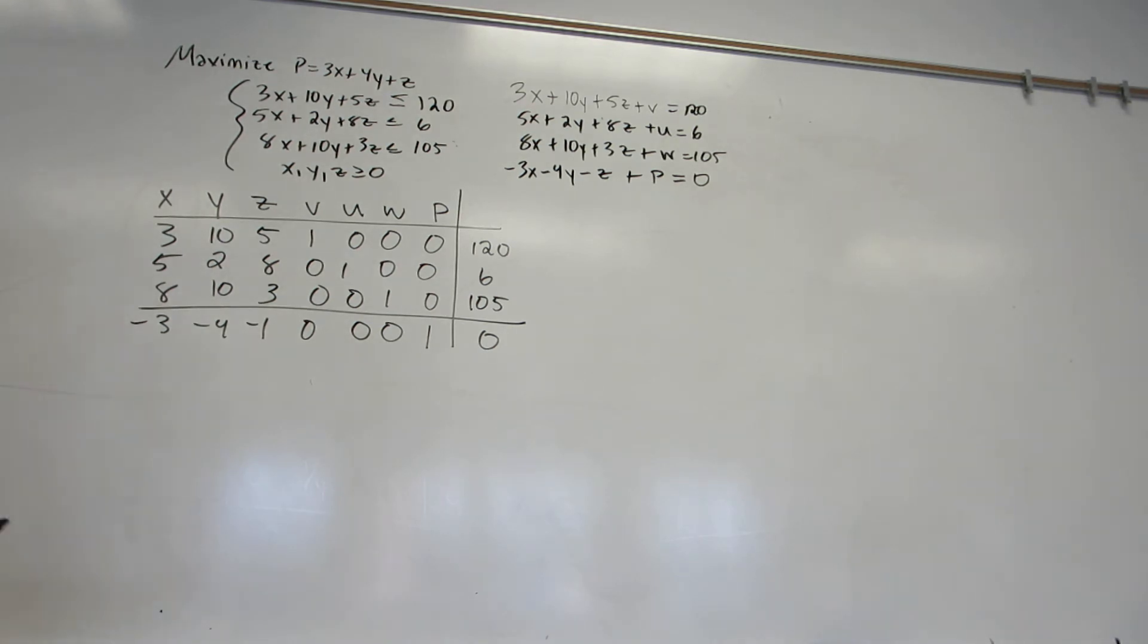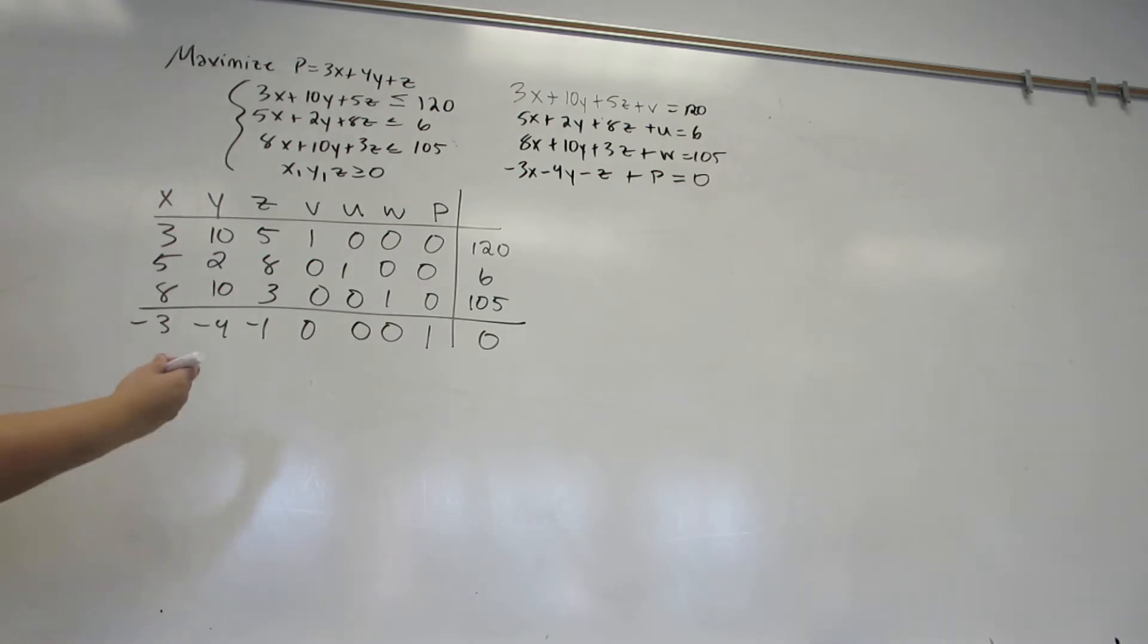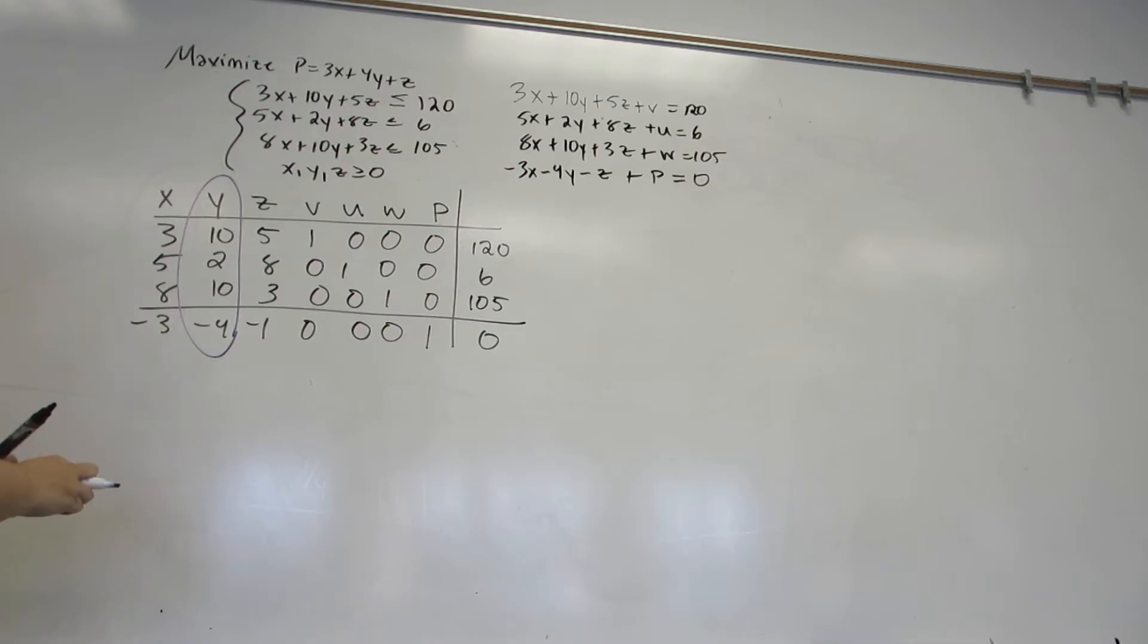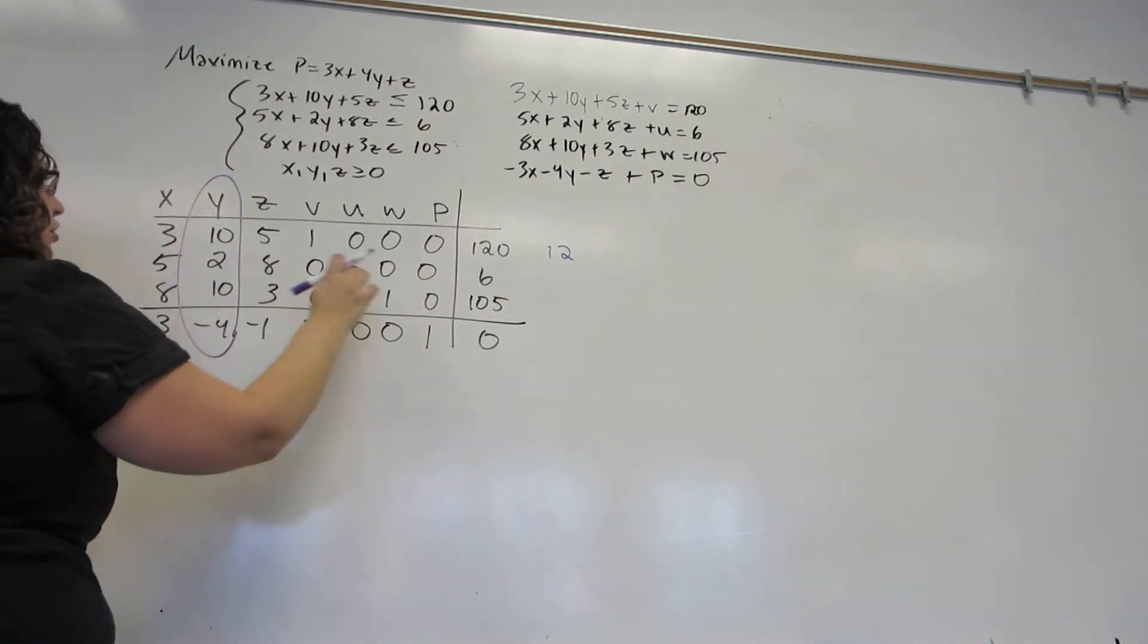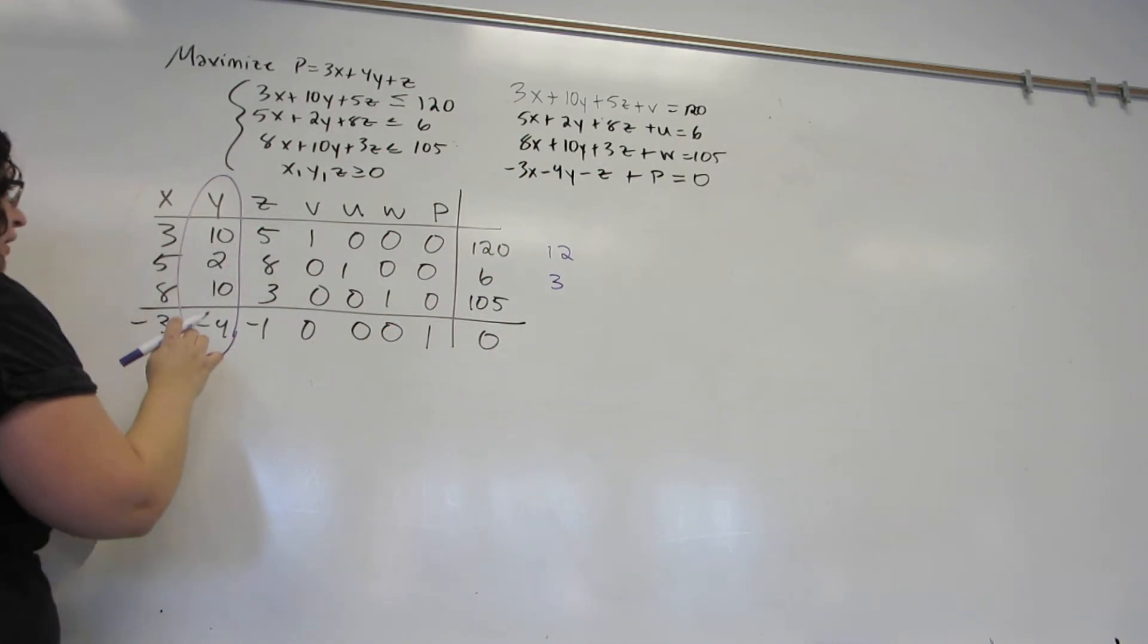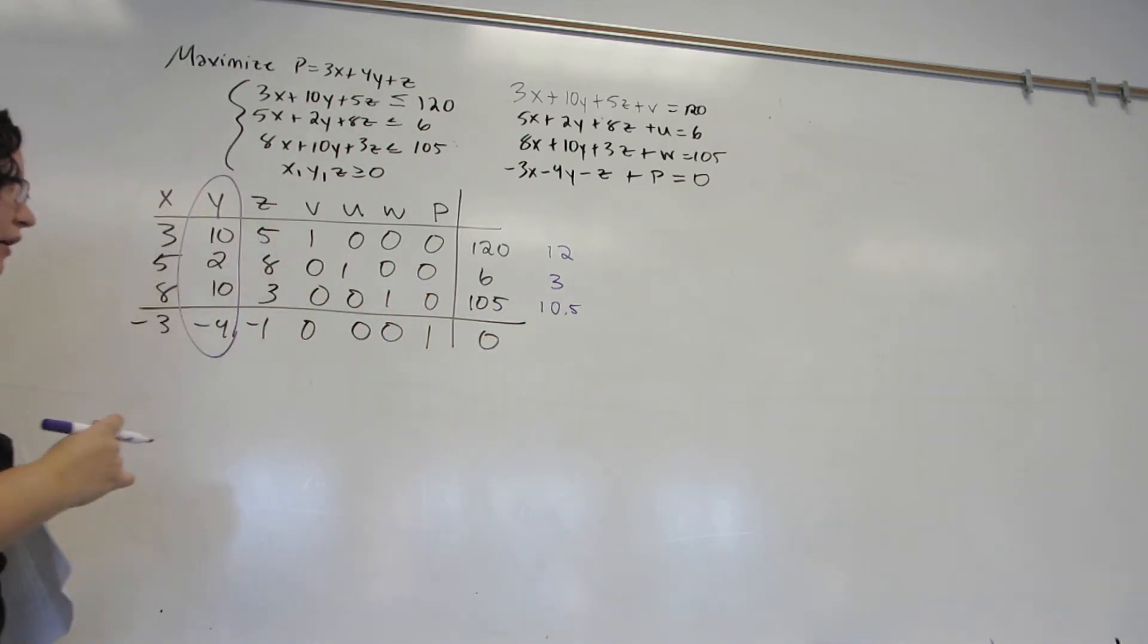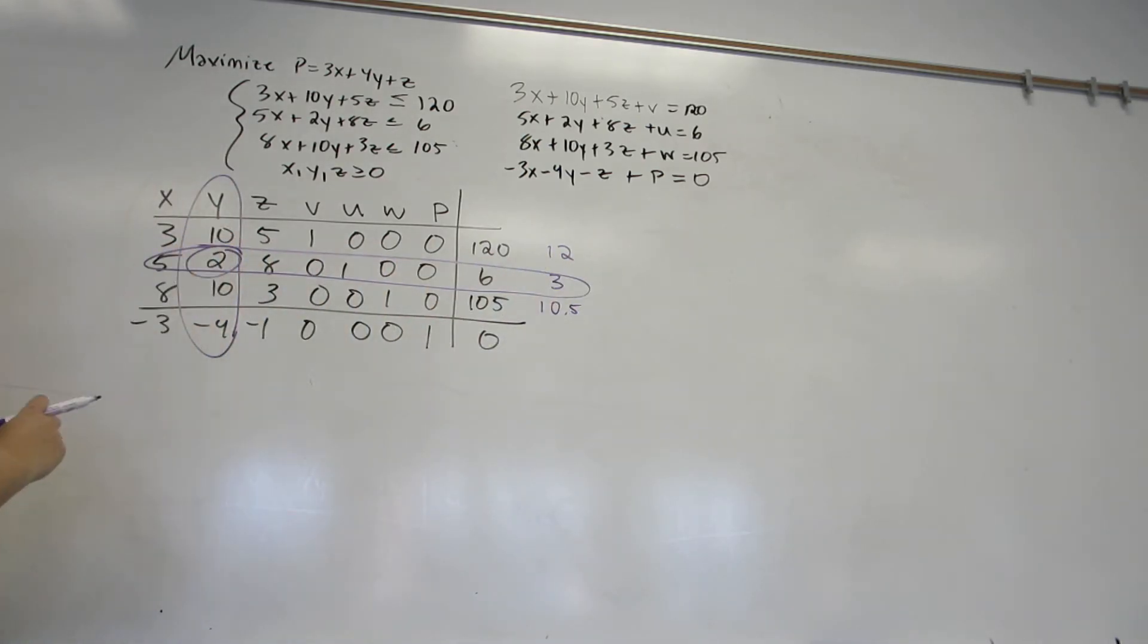The first thing is to decide a pivot element. So the pivot column will be the column with the most negative number. To decide between the rows, I'm going to take these numbers and divide them into these. So 10 into 120 gives 12, 2 into 6 gives 3, and 10 into 105 gives 10.5. The smallest of these is the 3, so this is my pivot row and my pivot element.